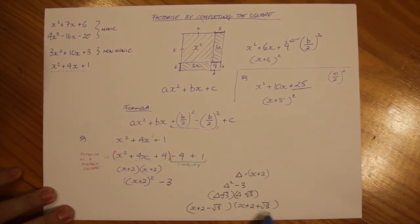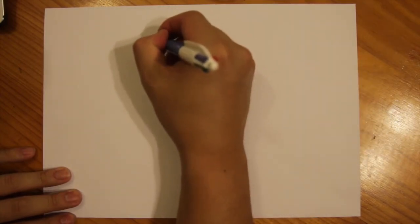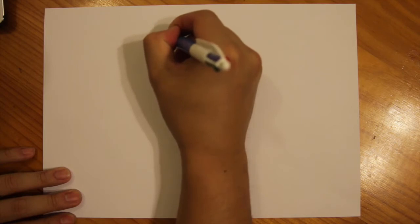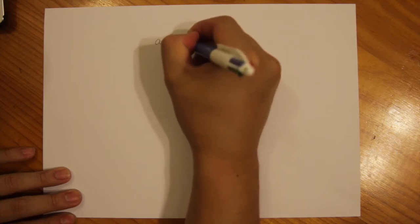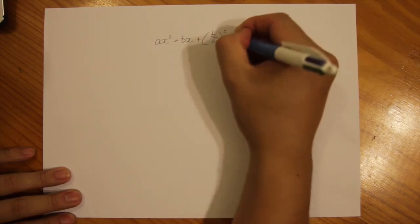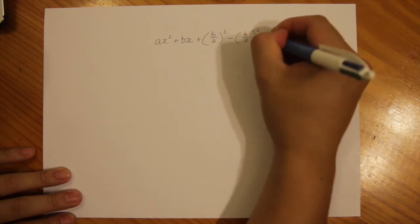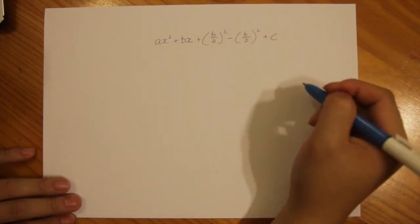There is our solution. We have that as one part and that as the second part — that is our answer. Remember we are using the formula: x squared plus bx, plus b over 2 squared, minus b over 2 squared, plus c. To balance it out, we add and subtract the same thing.